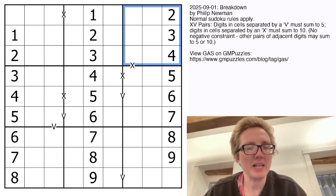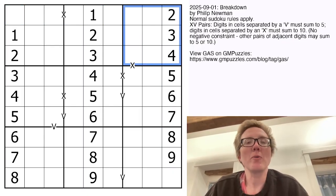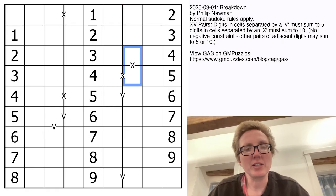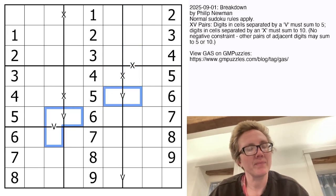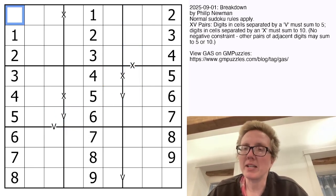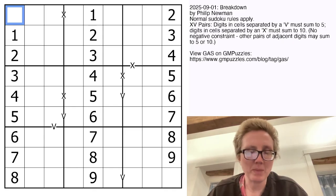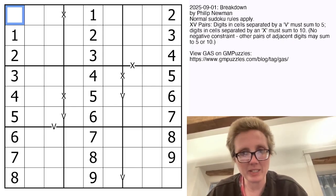And then we also have some x's and v's in the grid. Wherever you see an x, the two digits on either side of it sum to 10, and wherever you see a v, the two digits on either side sum to 5. Not all possible x's and v's are necessarily shown, so there might be other pairs elsewhere in the grid that sum to 5 or 10 where there isn't actually an x or v written in the grid.